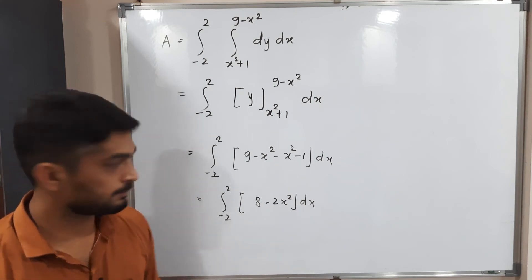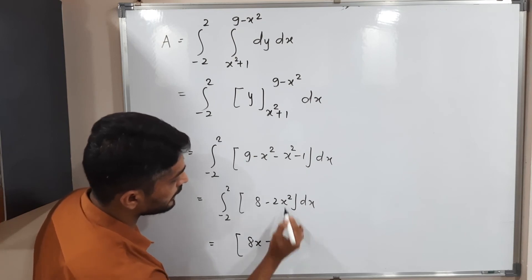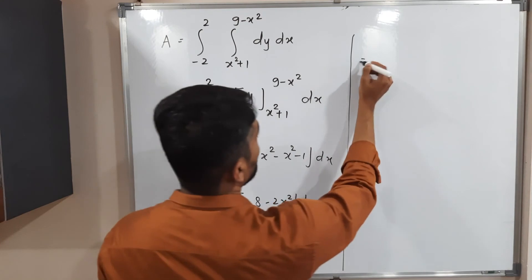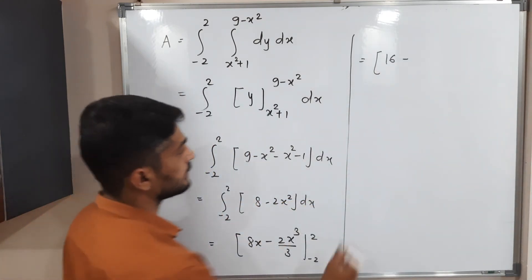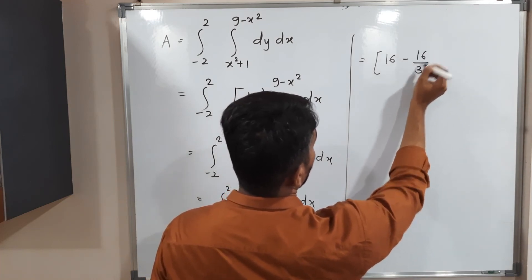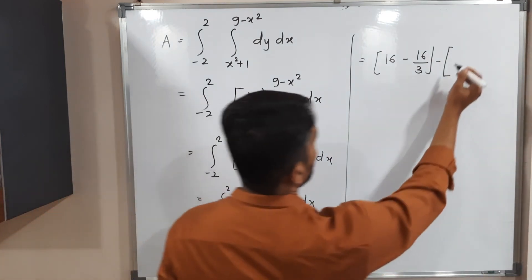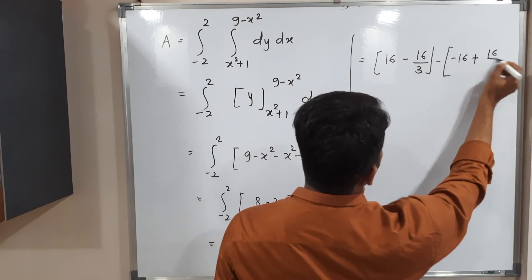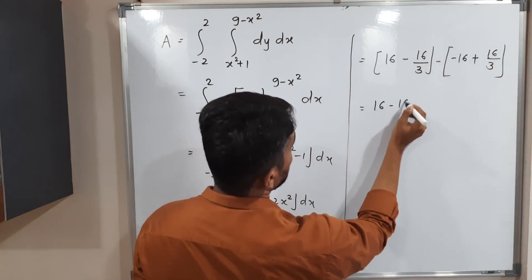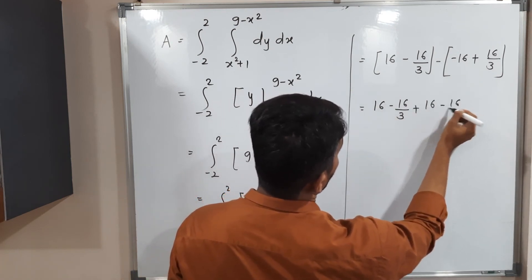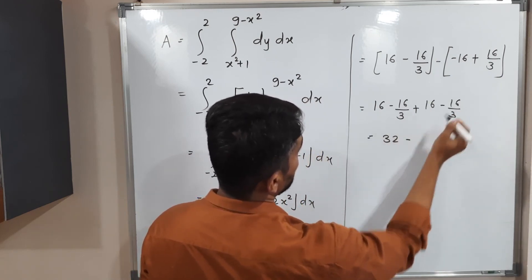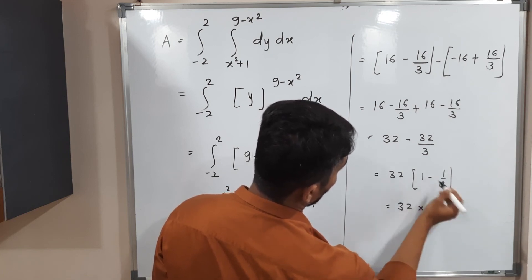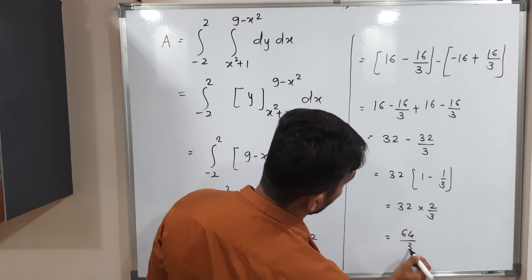Simplifying: 9 − 1 − 2x² = 8 − 2x². Now integrating with respect to x from −2 to 2: the integral of (8 − 2x²) dx = [8x − 2x³/3] from −2 to 2. Putting upper limit 2: 16 − 16/3. Putting lower limit −2: −16 − (−16/3) = −16 + 16/3. Subtracting: 32 − 32/3 = 32(1 − 1/3) = 32 × (2/3) = 64/3.